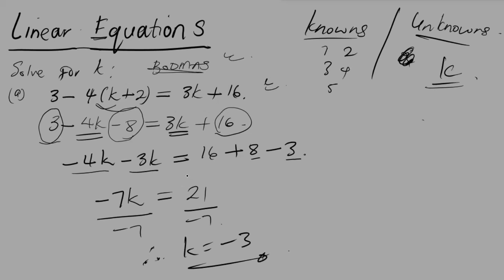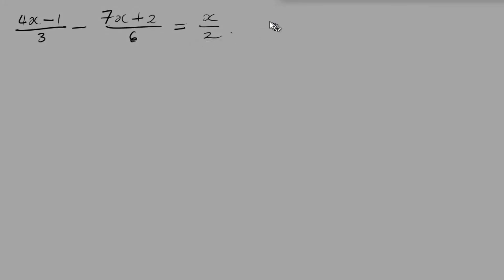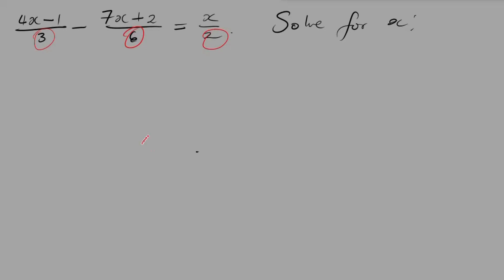Let's move on to something a bit more challenging. Here we have a question with fractions, and we need to solve for x. We have a denominator of 3, a denominator of 6, and a denominator of 2. The first thing we want to do is deal with these denominators by finding the LCM — the lowest common multiple of 3, 2, and 6.